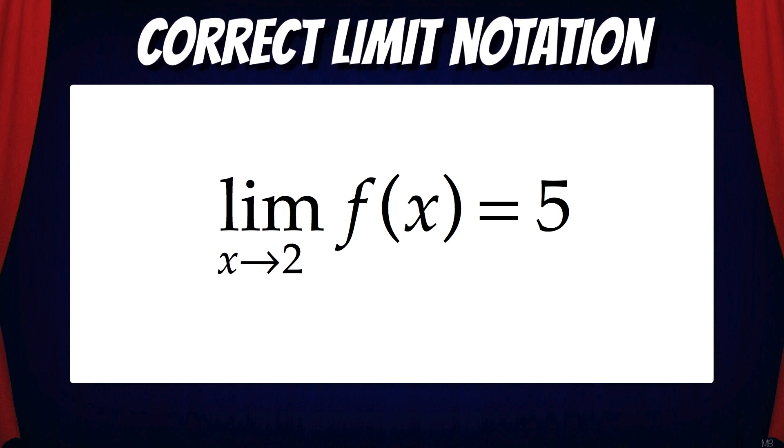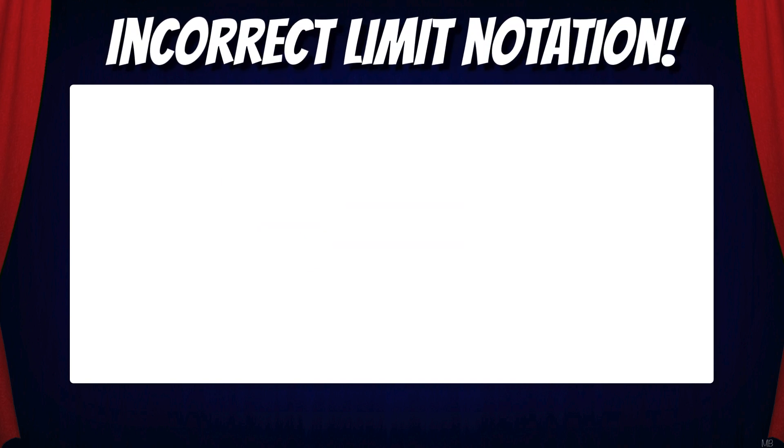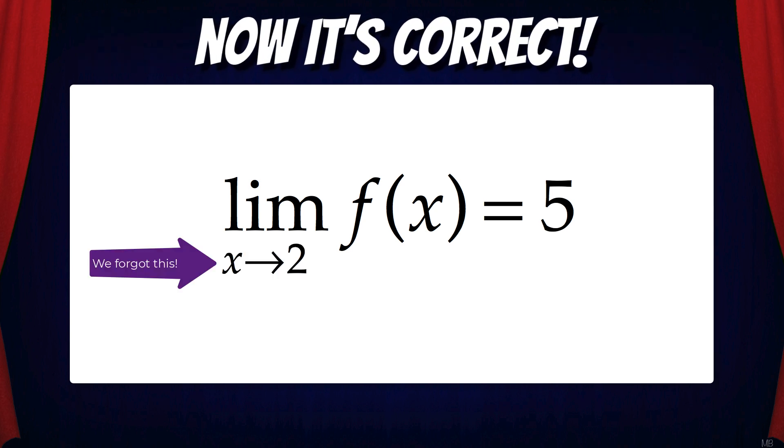Let's look at this same problem and show some examples of incorrect notation. The limit of f of x equals 5. Do you see why this is wrong? We forgot to include the value that x is approaching.